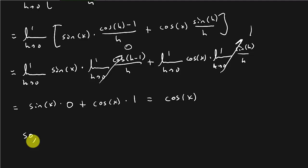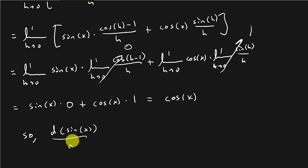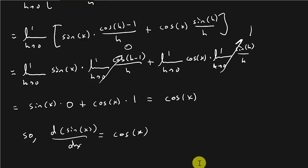We proved that the derivative of sine x with respect to x is equal to cosine x — and there's your proof. If you ever wondered how we got the derivative of sine x, well, there you go. Check out my other videos, give me a like, share, subscribe, comment, and I'll see y'all in the next one.